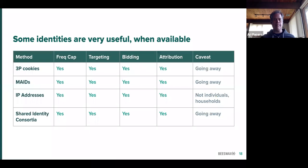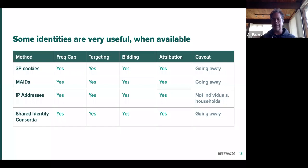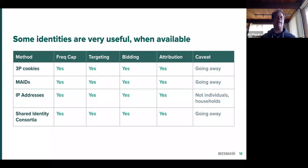When you pivot the method of the identity source against each of these four ways of using identity, you can get a vision for what is possible. Third-party cookies, IP addresses, and shared IDs are all really useful — that's why we've built digital tools to use third-party cookies, because they work really well. When a third-party cookie is available, it's great for frequency capping, great for targeting, great for bidding, great for attribution, with the caveats that it's a device not a person, that you can delete it. This is why the industry has grown up this way.